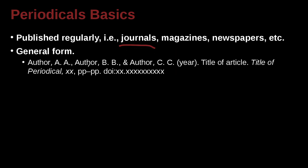So let's take a look at the general form for APA. In APA, when you write your reference list, you're going to begin with the author — that's the author's last name, surname — and then the author's first name and middle initial, and then the second author and the second author's first name and middle initial, and the third author, etc.